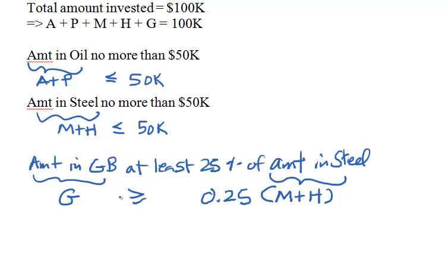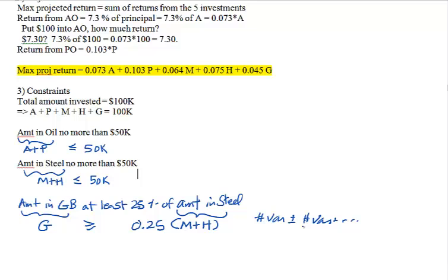We actually need to rewrite this constraint in standard format. That means on the left-hand side you have number-times-variable terms; in the middle you have the inequality sign; and on the right-hand side you should have only a single numeric value — no variables on the right-hand side.